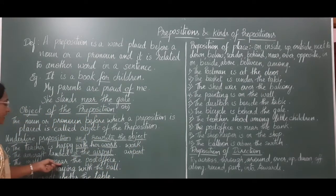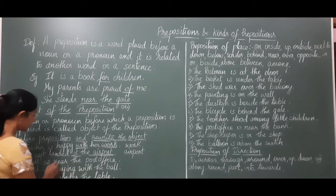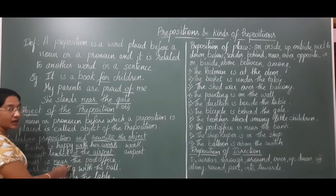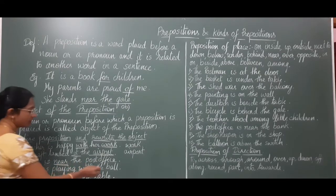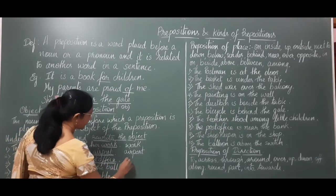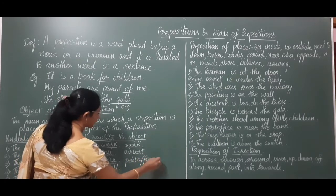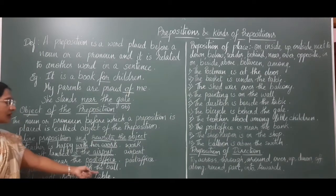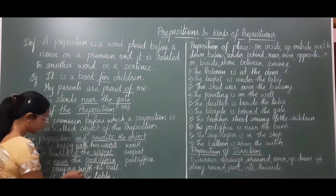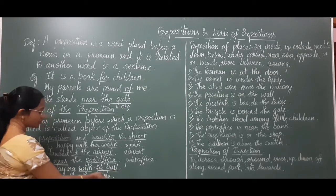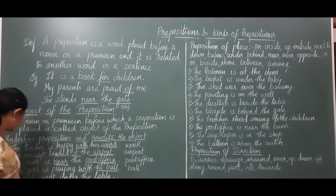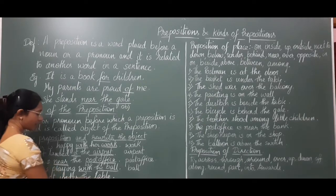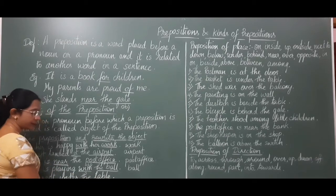The mall is near the post office — preposition 'near' is placed before the noun 'post office,' and 'post office' becomes the object of preposition 'near.' The girl is playing with the ball — preposition 'with' is placed before the noun 'ball,' so 'ball' becomes the object. The cat crept under the table — preposition 'under' is placed before the noun 'table,' and 'table' becomes the object of preposition 'under.'